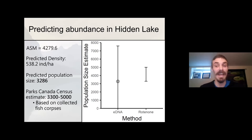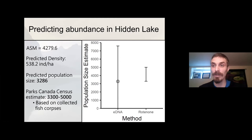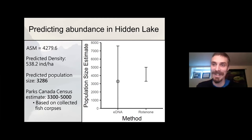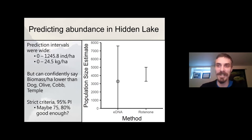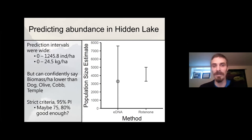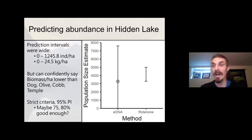Parks Canada did a census estimate after applying rotenone to the lake based on the number of fish corpses they collected. They predicted there would be somewhere between 3,300 and 5,000 brook trout present in that lake prior to treatment. So I think that's pretty good — we undershot a little bit, but for a day of eDNA sampling I think that's actually pretty decent. I will note, though, that our prediction intervals were pretty wide, which is expected when you only have a relationship with a sample size of N equals 9 to predict from. Our prediction intervals ranged from 0 to about 1,250 individuals per hectare and 0 to 25 kilograms of biomass per hectare.